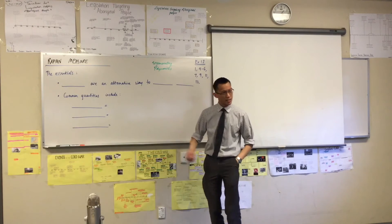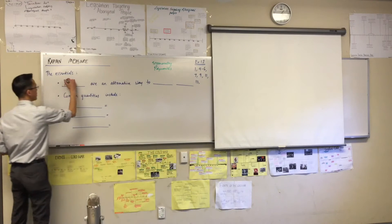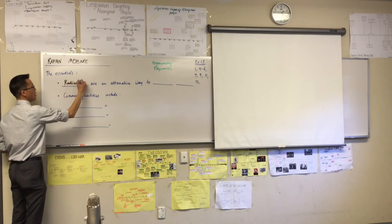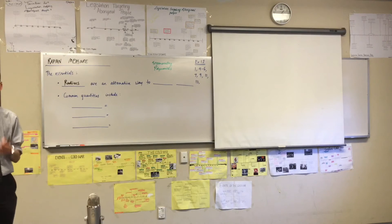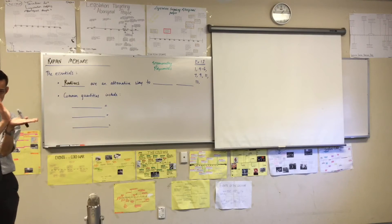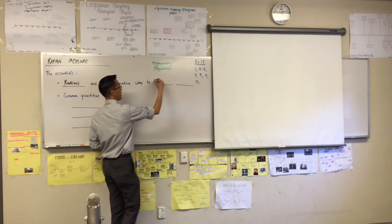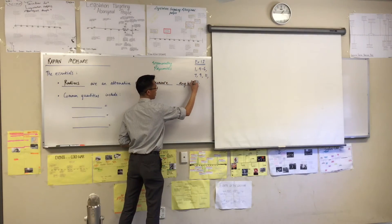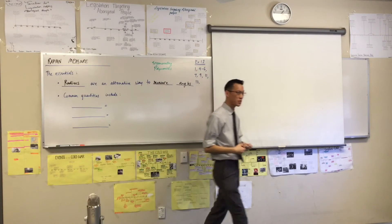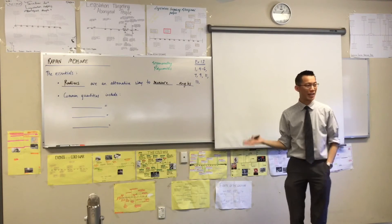So let me tell you the essentials. Number one, radians. Radians, what are they? Radians, for our intents and purposes, you need to understand them as an alternative way to measure angles. Now, you might think, what's wrong with degrees? And the answer is, actually, there are lots of things wrong with degrees, and you'll find out when you do radian measure proper.